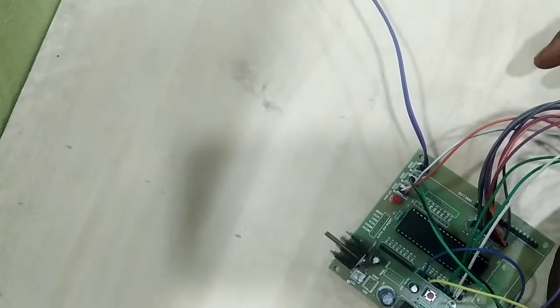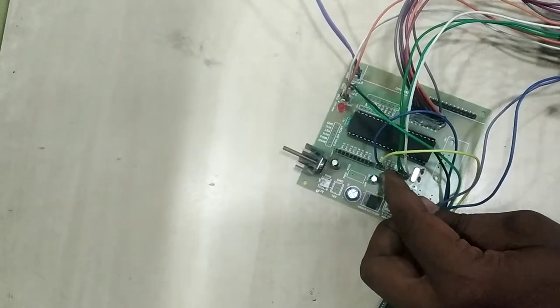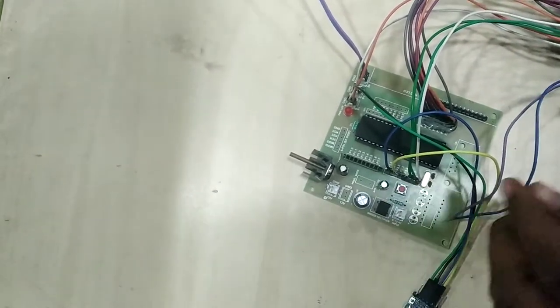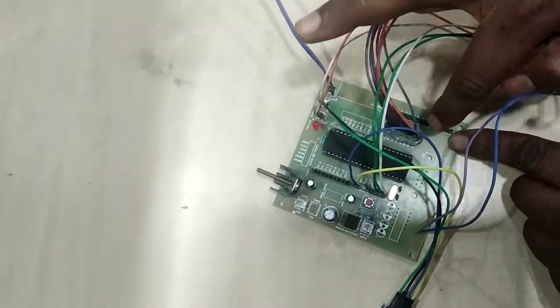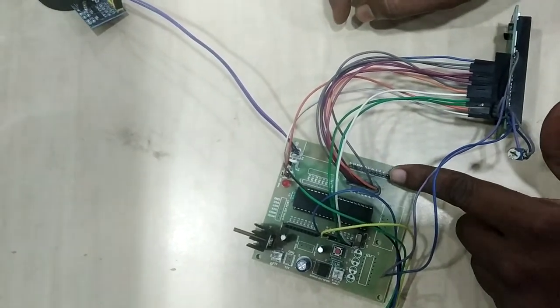And RS, RW pin connections given to P3.7, P3.6, P3.5 pins from the controller board. And data lines I given to one complete port, which is port 2 from microcontroller.